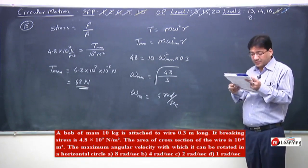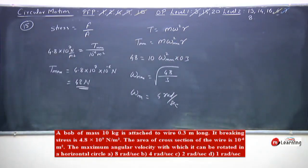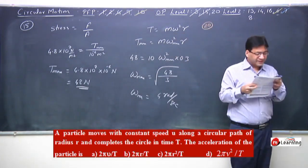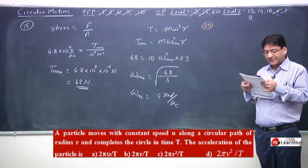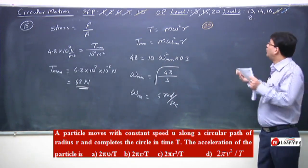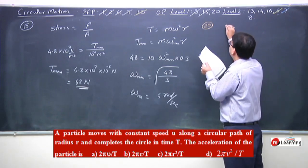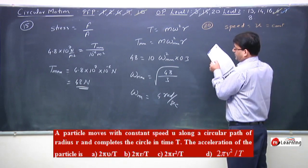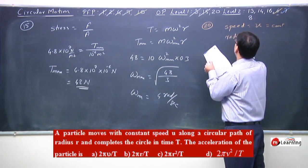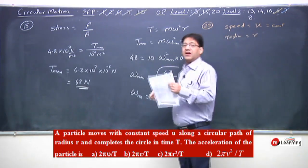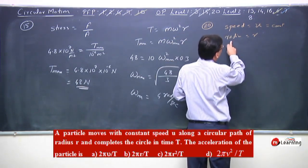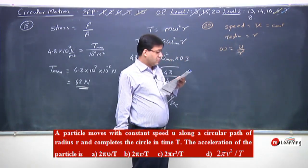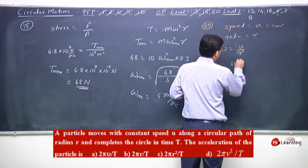20th problem. A particle moves with constant speed u along a circular path of radius r, completing the circle in time t. Find the acceleration of the particle. The speed is u, constant, and radius is r. We have speed u and radius r, so angular velocity is u/r, and acceleration of the particle is u²/r, or equivalently ω²r.